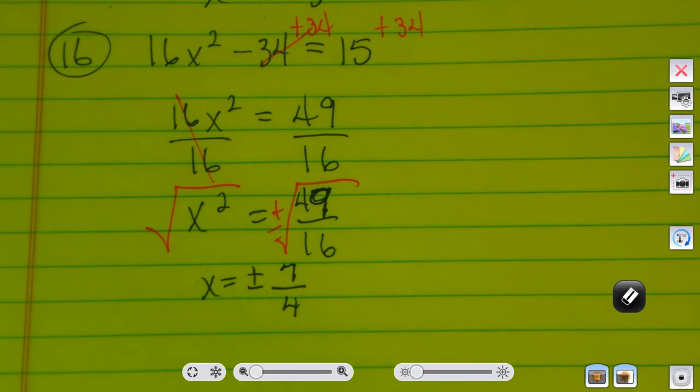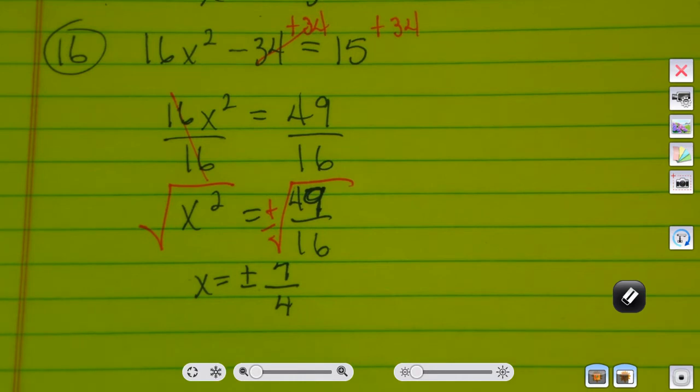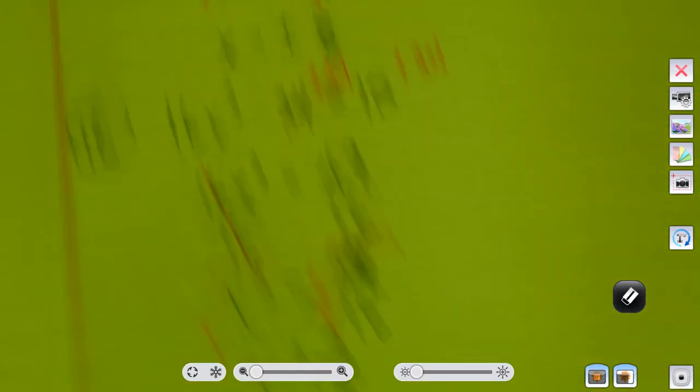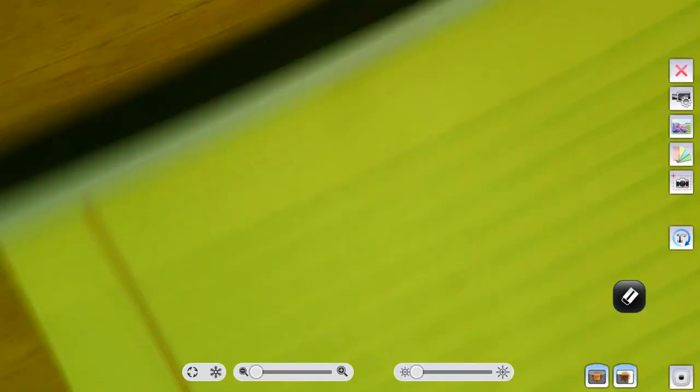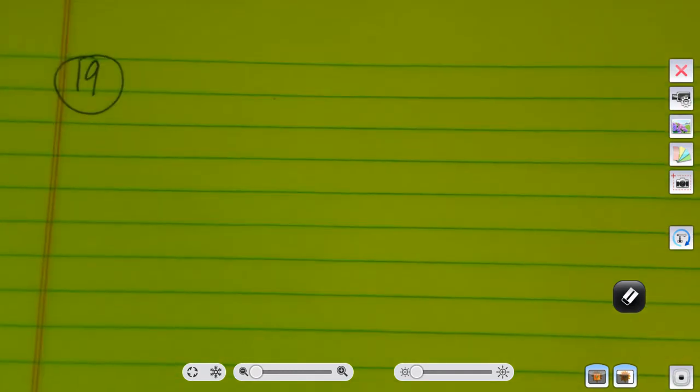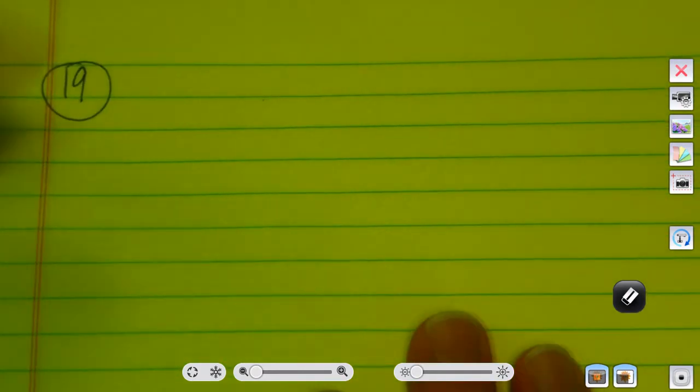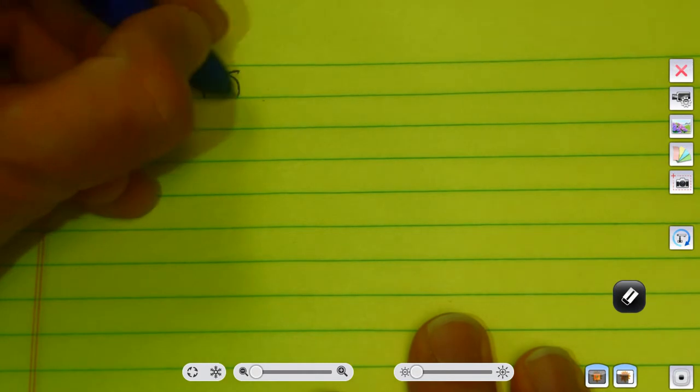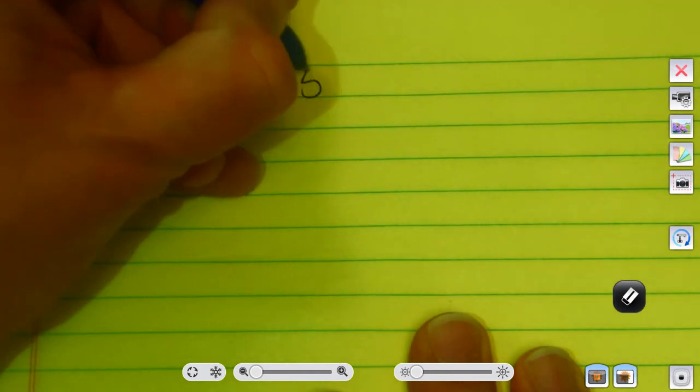That brings us to the last section, problem 17 through 24. And 17 through 24 has a couple big words: irrational solutions. When we started this class off today, we were looking at IXL, and we were simplifying radicals. That's what we're going to have to do to these answers. There won't be perfect squares. For example, look at number 19.